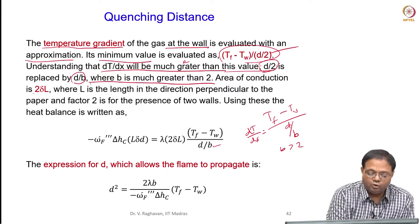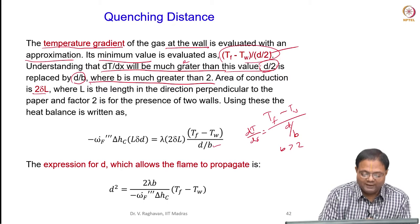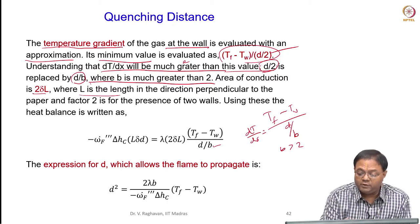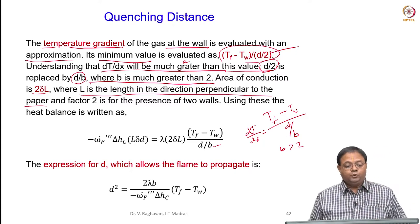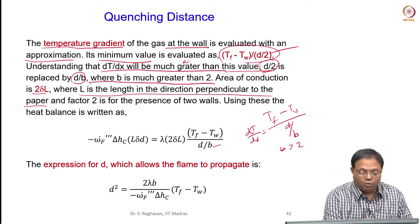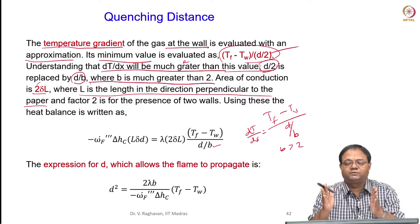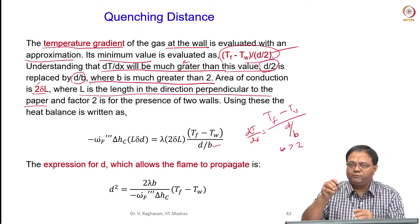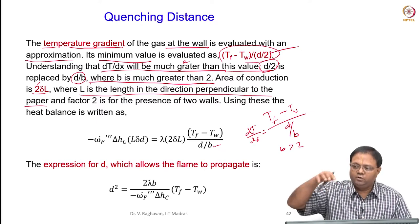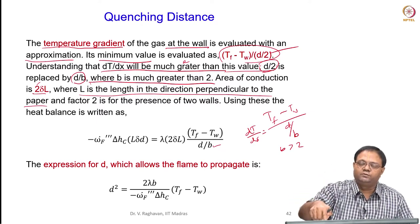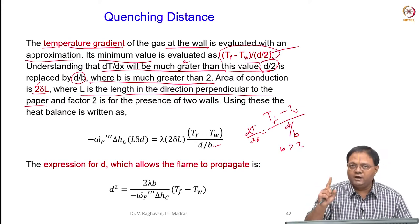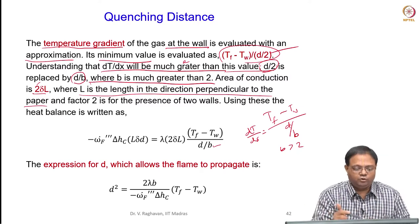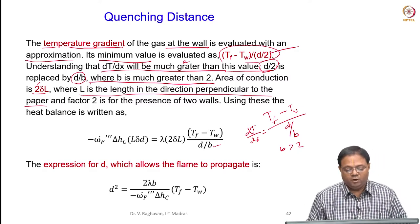The area of conduction is 2 times δ times L, where L is the length in the direction perpendicular to the paper or screen. So 2 times that may be the area of conduction. The factor 2 comes because 2 walls are present. So the area of cross section is δ times L — both sides gives 2δL.